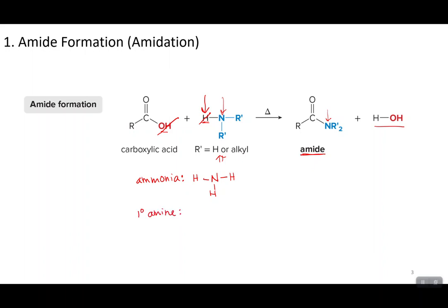Primary amines will also be able to react to form amides. In a primary amine, one of the hydrogens is replaced with a carbon-containing group (shown as R), and the rest are hydrogens. We classify it as primary when the nitrogen is bonded to just one other carbon-containing group. That means there is a hydrogen available to bond to the OH group to carry out the reaction. Likewise, a secondary amine — with one and two carbon-containing groups — will still have that hydrogen available. However, a tertiary amine will not be able to react because it has three carbons and no hydrogens available.